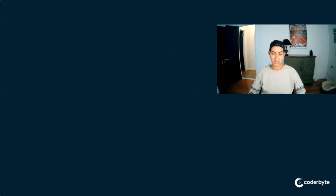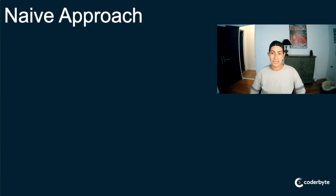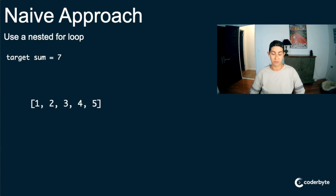So what would the naive approach be? It's important to actually walk through the naive approach because it illustrates why the better approach is so much better, rather than jumping straight to it. The naive approach: use a nested for loop. One pointer signifies the outer for loop and one is the nested for loop, so we look at all elements for each iteration of the outer loop.